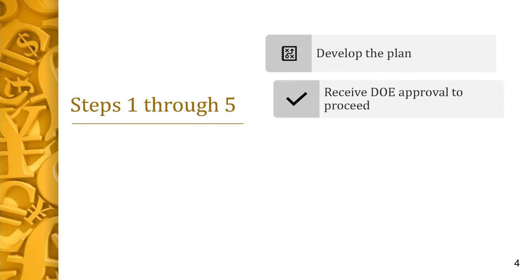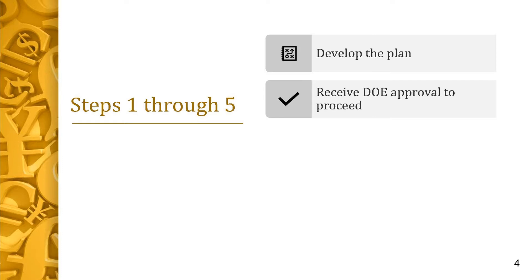In Step 2, the contractor submits the formal request for approval to initiate the OTB to the DOE contracting officer. The request includes a top-level projection of potential cost and/or schedule growth, a recommendation of whether performance variances will be retained, and an implementation schedule. Upon approval from the contracting officer, the contractor and DOE will proceed to Step 3.